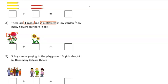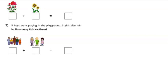How many are they? One, two, three, four, five, six. So we have six flowers. Let's look at our last example. We are told: five boys were playing in the playground, and three girls also joined in. How many kids are there?